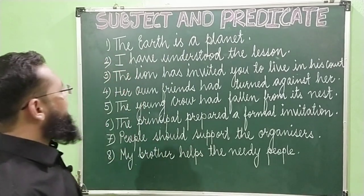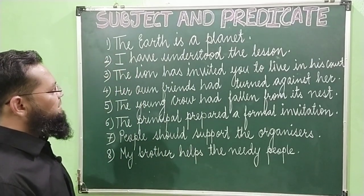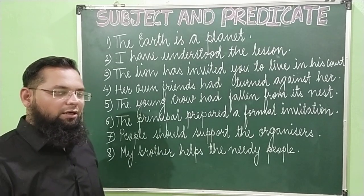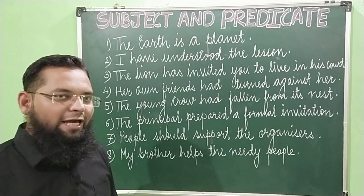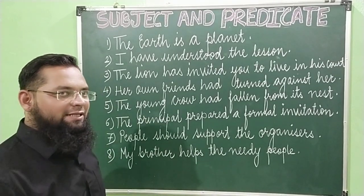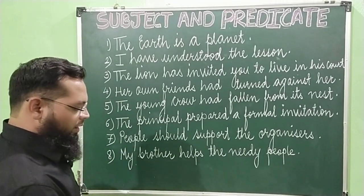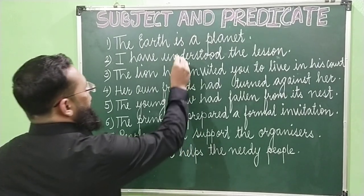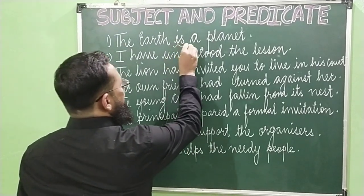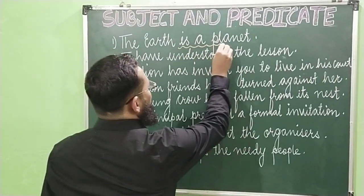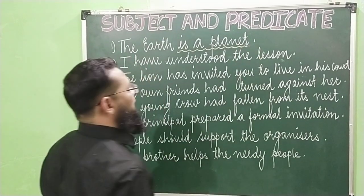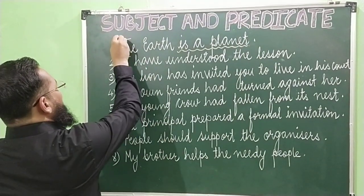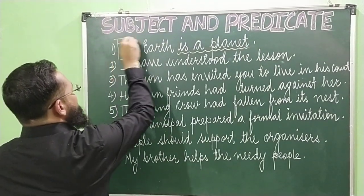The first example: 'The earth is a planet.' What is the helping verb in the sentence? The helping verb is 'is.' So from 'is' till the end, this part of the sentence will be the predicate. And 'the earth' will be the subject.